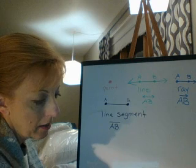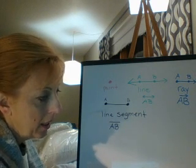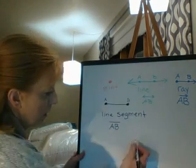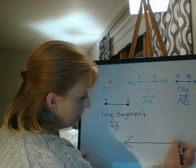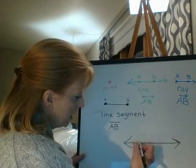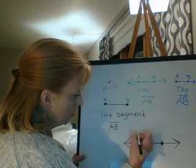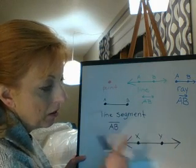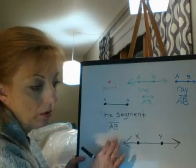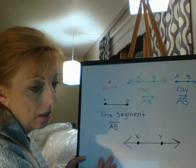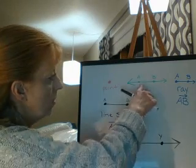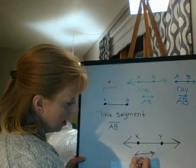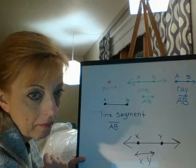Let's look at the example on page 873. It says Molly drew the figure shown — identify the figure she drew. She drew a figure with two points, one called X and the other called Y. Since it goes in both directions and the arrows show it keeps going without stopping on either side, that is called a line. She drew line XY.